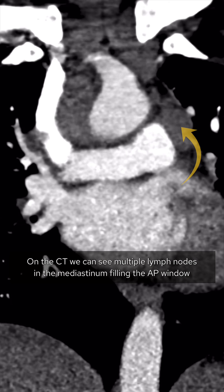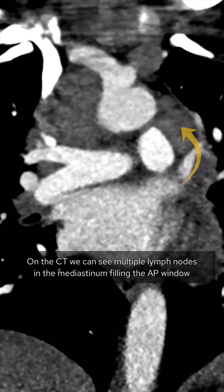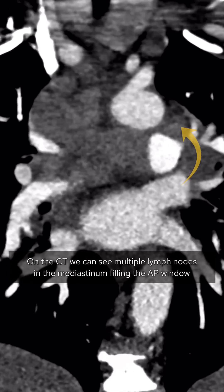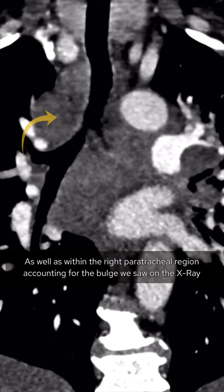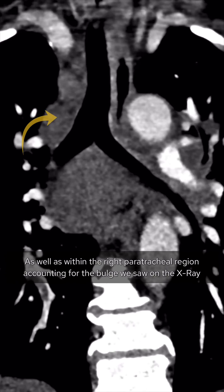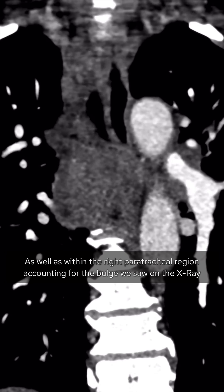On the CT, we can see multiple lymph nodes in the mediastinum filling the AP window, as well as within the right paratracheal region, accounting for the bulge we saw on the X-ray.